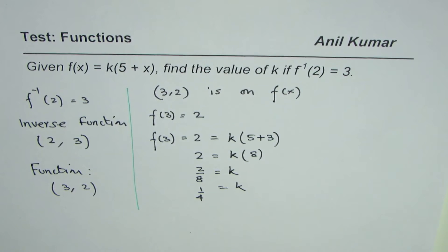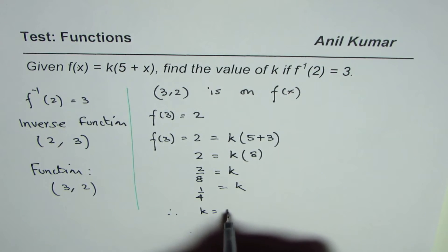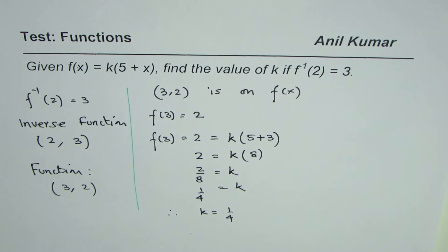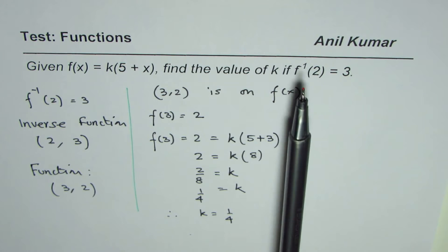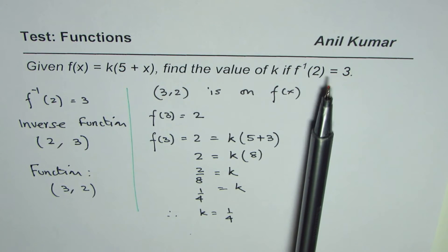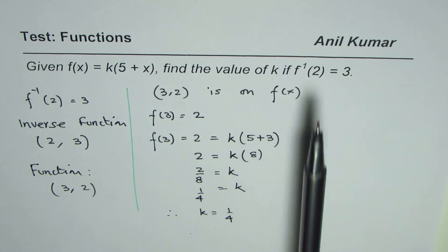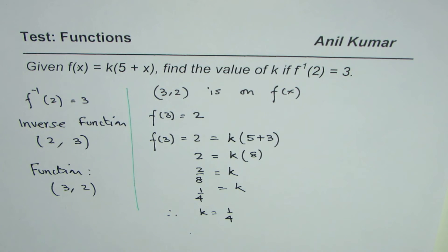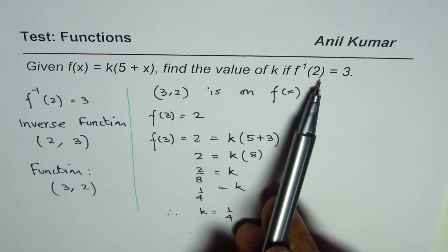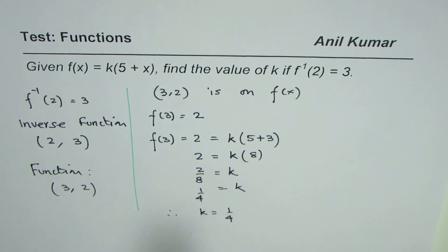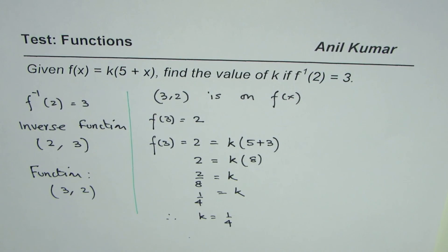That gives you the answer, and therefore k equals 1 over 4. So that is how you can actually solve such questions. The idea is to use the coordinate points of the inverse function to find its original point on the function by swapping x and y. An alternate method, of course, is to find the inverse and then use the point, but I think this is much simpler. I hope that helps. Thank you and all the best.